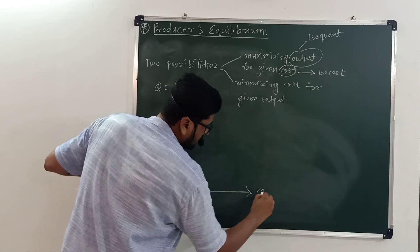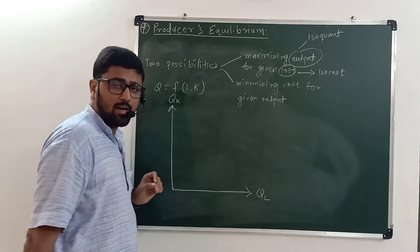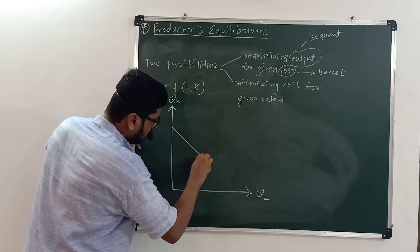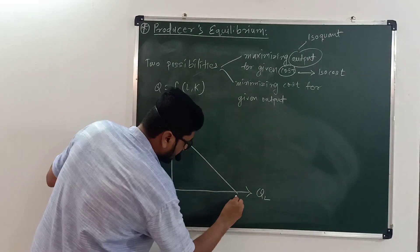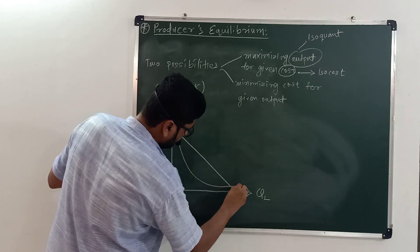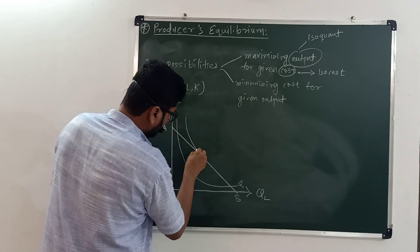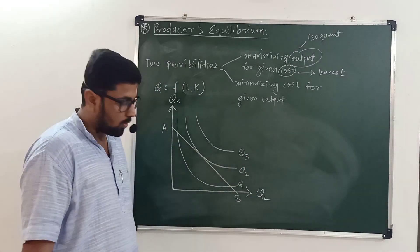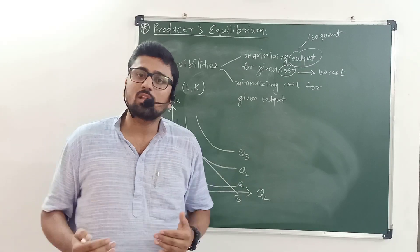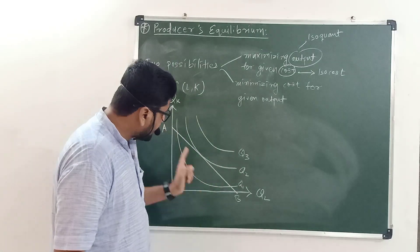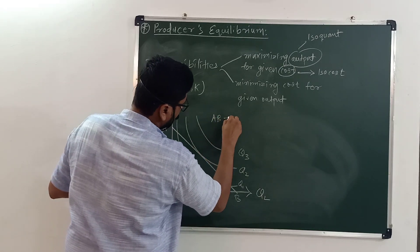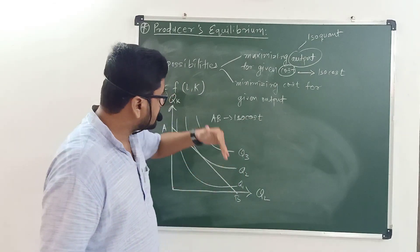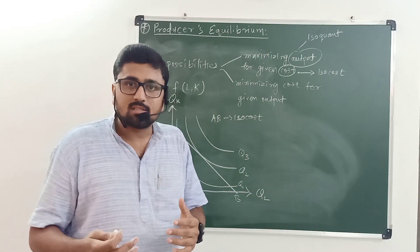We measure quantity of labor along the x-axis and quantity of capital along the y-axis. The cost is given, which means we have only one iso-cost line, AB. There is a first iso-quant, second iso-quant, and third iso-quant. Higher the iso-quant, higher the production; lower the iso-quant, lower the production. AB is the iso-cost line showing total outlay or total cost, and with this given cost, the producer wants to maximize output.